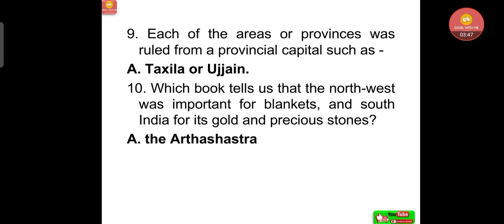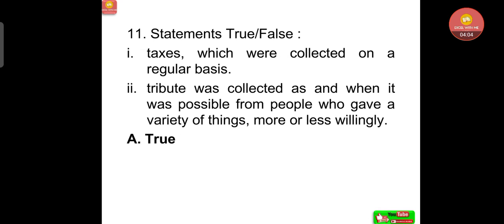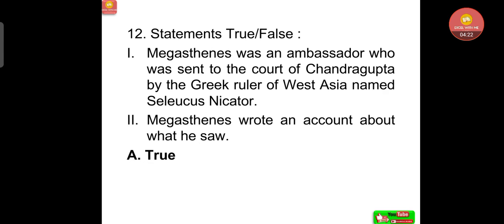Each of the areas or provinces was ruled from a provincial capital such as Takshashila or Ujjain. Which book tells us that the northwest was important for blankets and south India for its gold and precious stones? That was the Arthashastra by Kautilya or Chanakya. Regarding taxes and tribute: taxes were collected on a regular basis, while tribute was collected as and when possible from people who gave a variety of things more or less willingly — both statements are true. Megasthenes was an ambassador sent to the court of Chandragupta by the Greek ruler of West Asia named Seleucus Nikator, and Megasthenes wrote an account of what he saw — both statements are true.